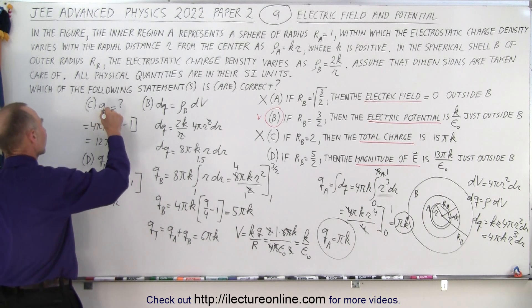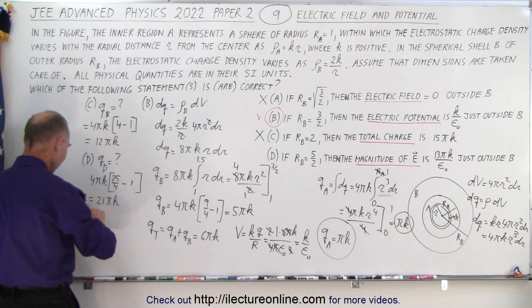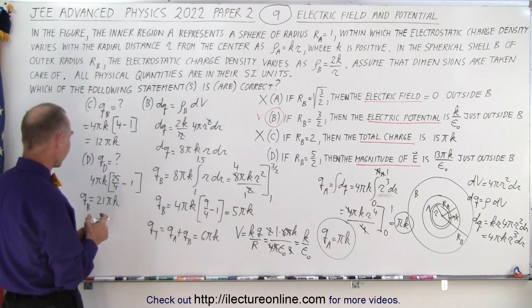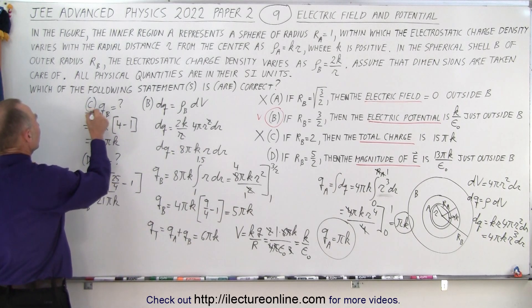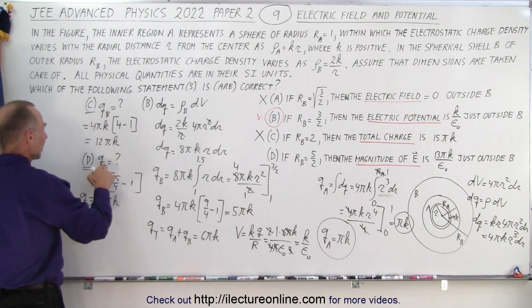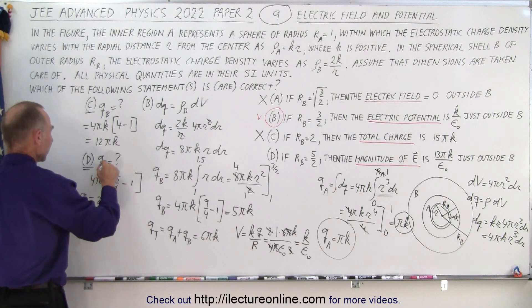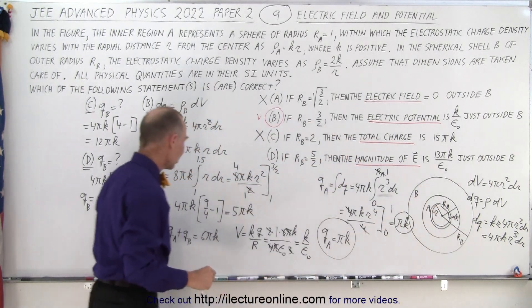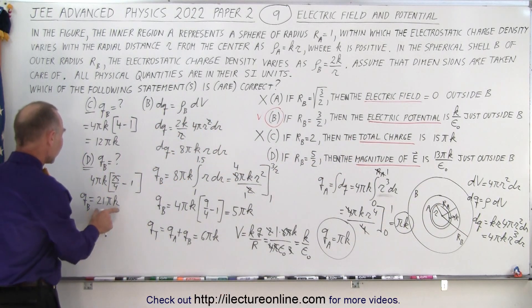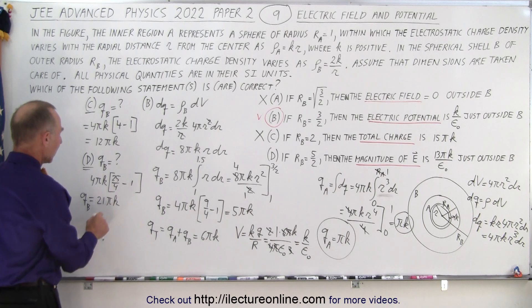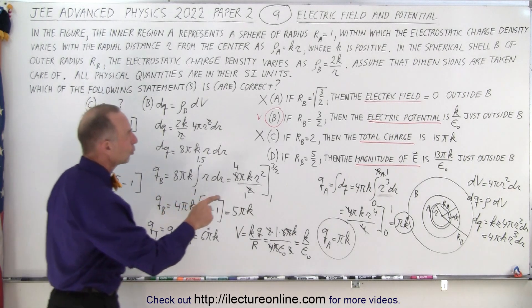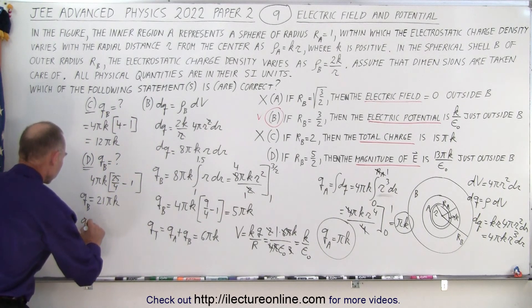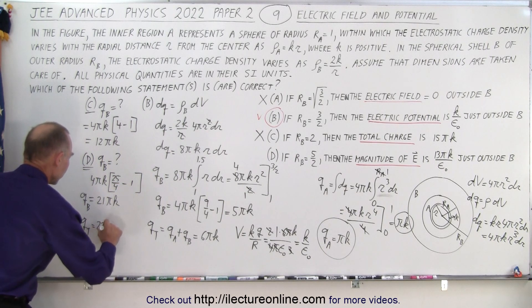B simply says it's the charge in the spherical shell B. We're doing part C here, we're doing part D here, but I should write B because we're dealing with the charge inside the spherical shell. Alright, so that's 21 pi k. And so when we add that to the 1 pi k for qA, the total charge, so q total is equal to 22 pi k.